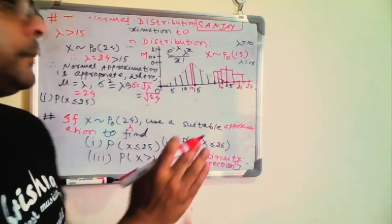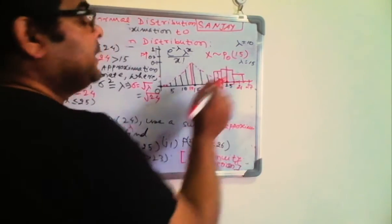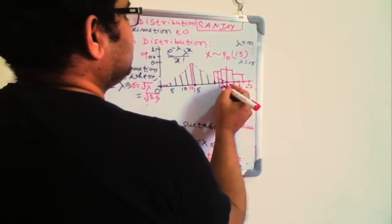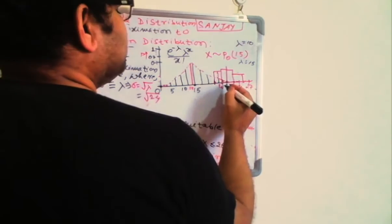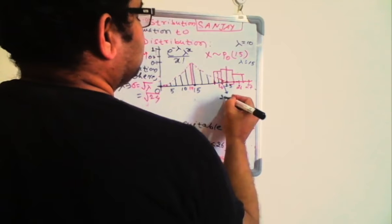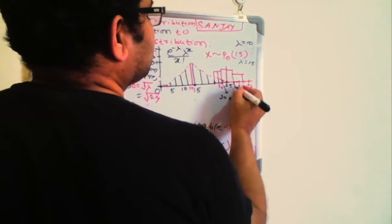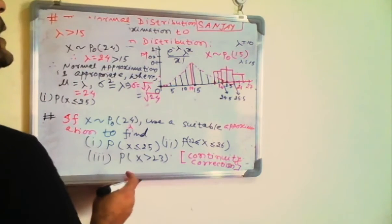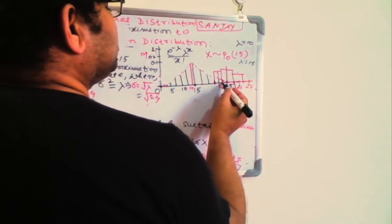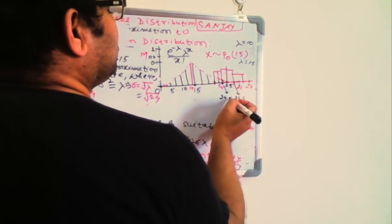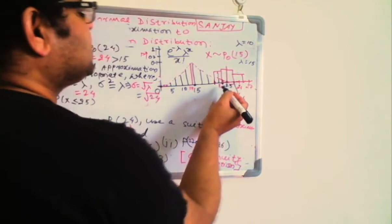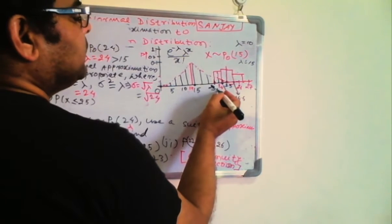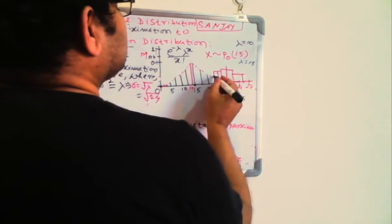It's worth noting why normal approximation is useful here: using the Poisson formula directly for P(X ≤ 25) would require computing 26 separate terms (x equals 0 through 25), which is time-consuming. The normal approximation gives a very similar answer in far fewer steps.